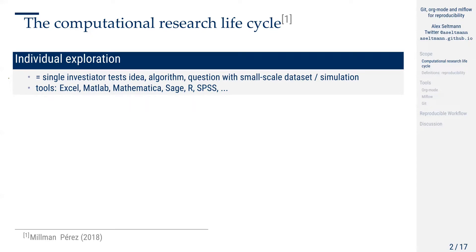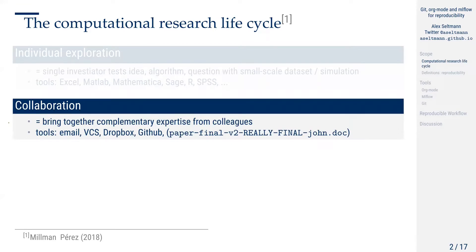Then at some point we might want to bring in collaborators who also want to work on the code or have some expertise. We do this via email or a version control system. We might also just put the code in a Dropbox or a GitHub repository. Or if we work on the final paper together — something I myself have experienced — we end up with these incredibly long document names where we append our current contributions.